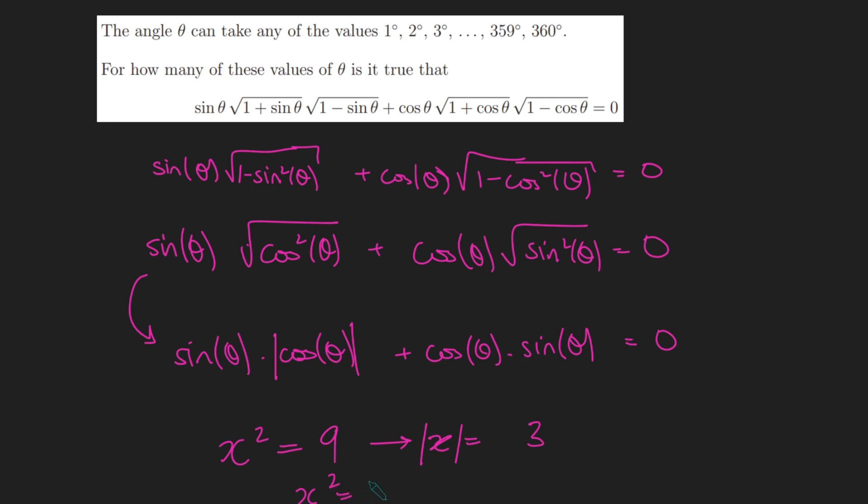So for example, if I had x² equals 5, what can I deduce? I can say the absolute value of x is root 5. I can't necessarily say that x equals root 5, but I can say that the absolute value of x equals root 5. So I can say sin(θ) times the absolute value of cos(θ) plus cos(θ) times the absolute value of sin(θ) equals 0.